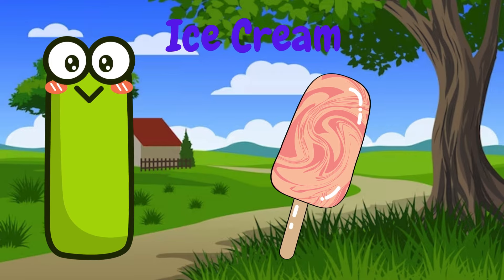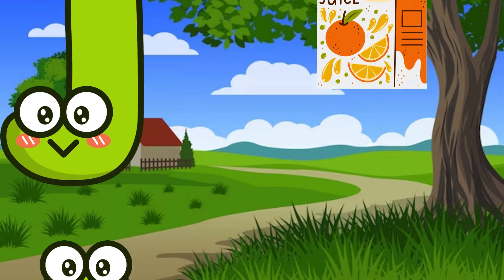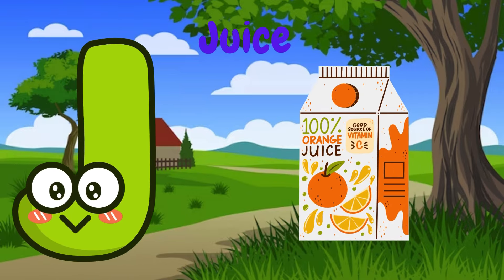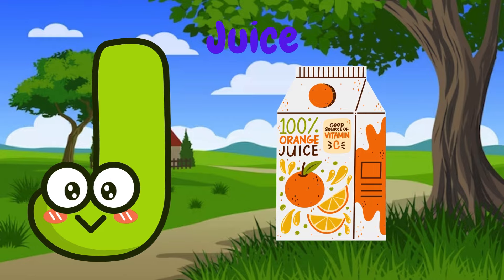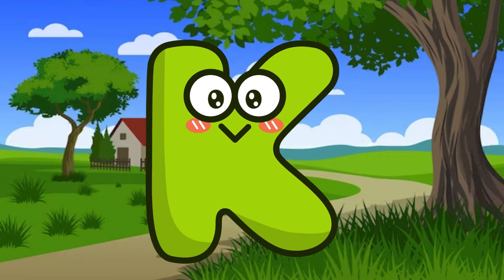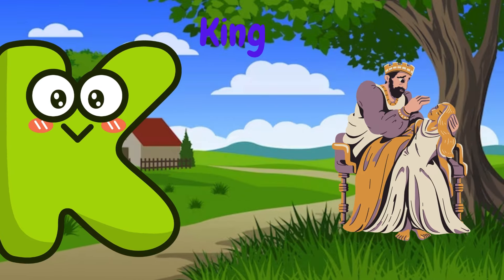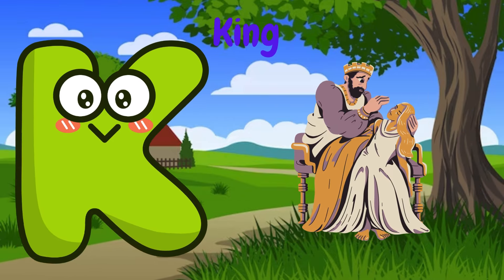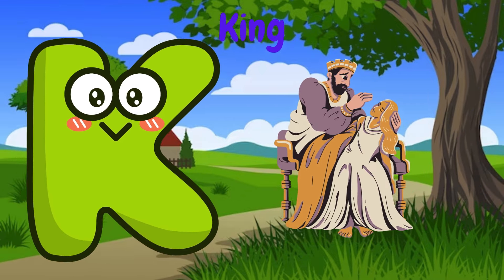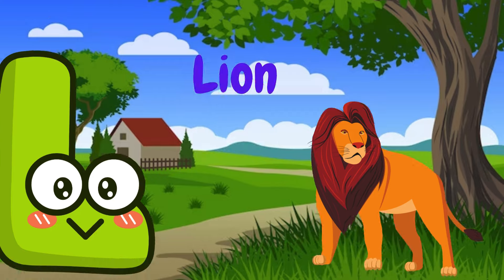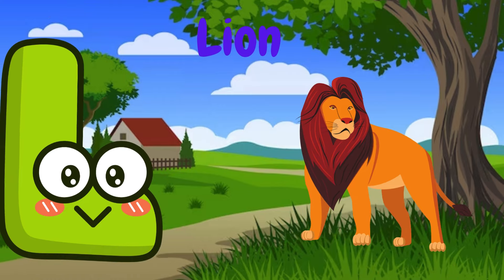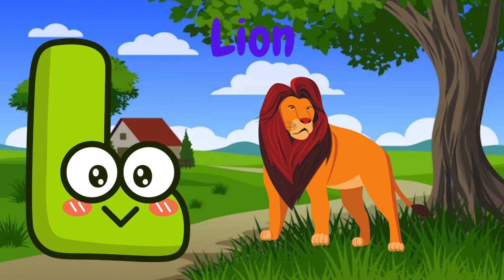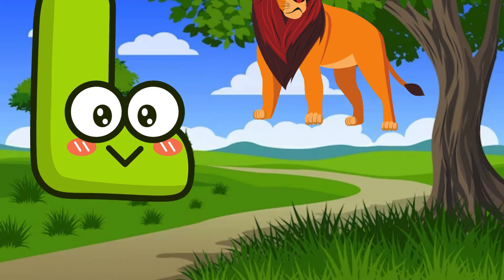I is for ice cream, i-i-ice cream. J is for juice, j-j-juice. K is for king, k-k-king. L is for lion, l-l-lion.